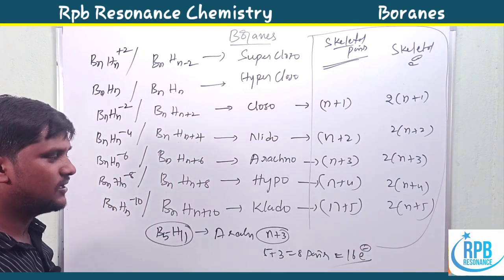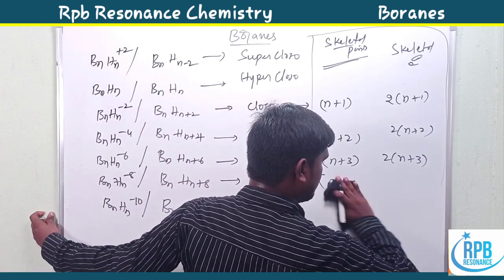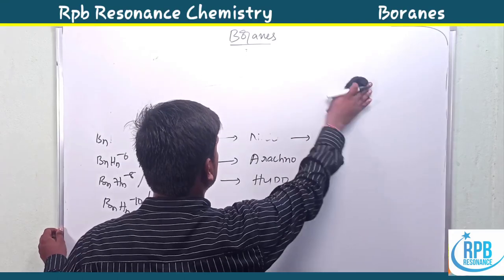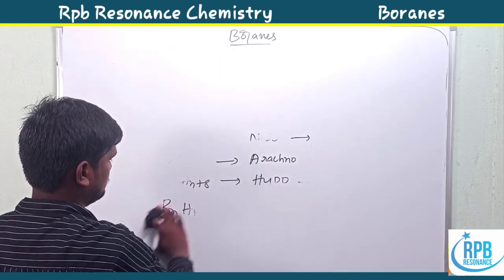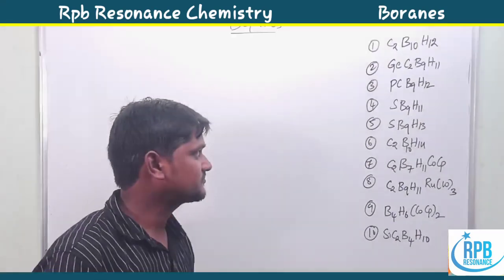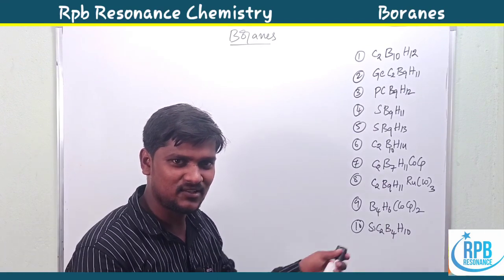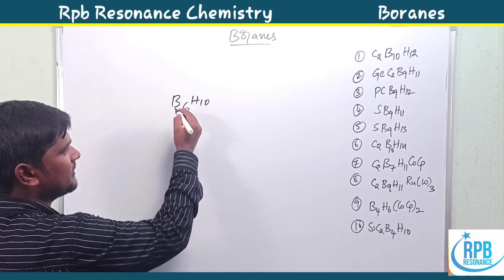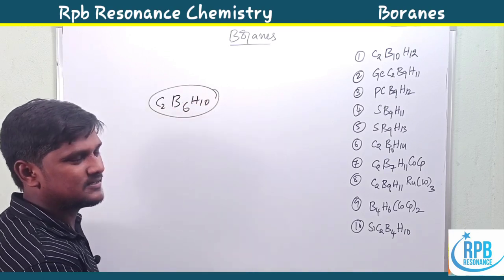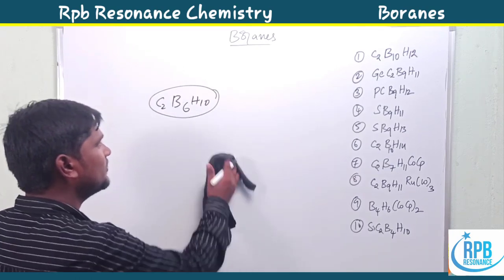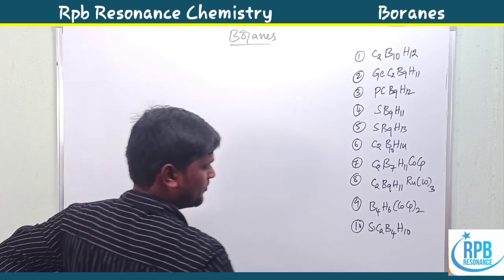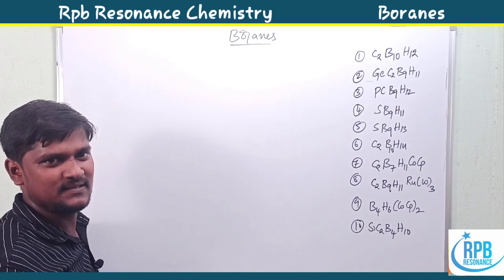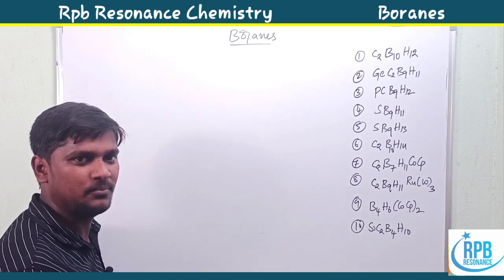Now let us move on to carboranes. Carboranes are like boranes, but instead of only boron atoms, some carbon atoms are also involved in the cage structure. We need to predict whether these carboranes are closo, nido, arachno, hypo, or clado type — the same classification used for boranes.